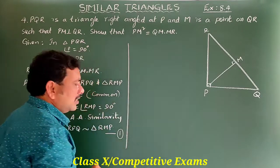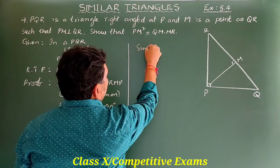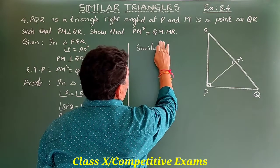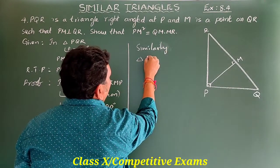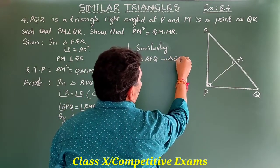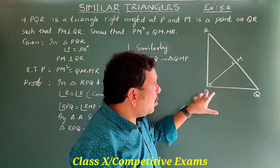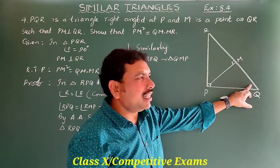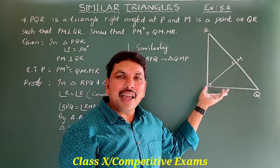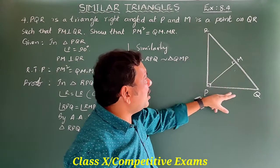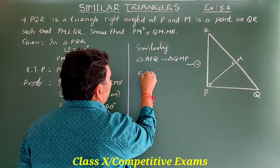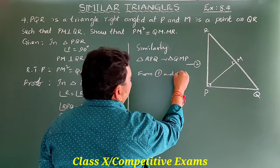Similarly, triangle RPQ is also similar to triangle QMP. In both triangles, angle Q is the common angle, and angle RPQ is equal to angle QMP. By AA similarity, triangle RPQ is similar to triangle QMP. This is equation number two.